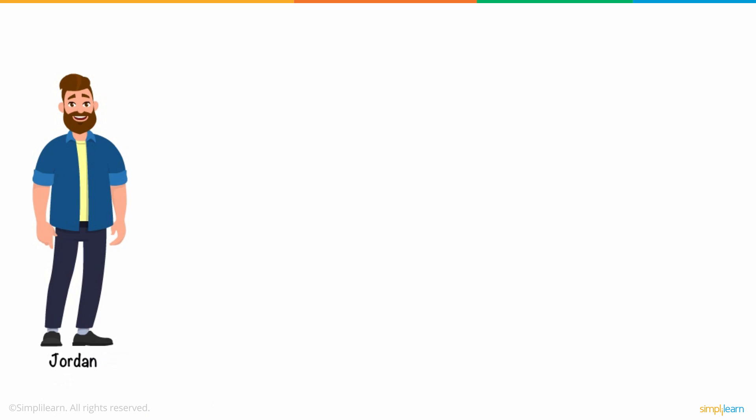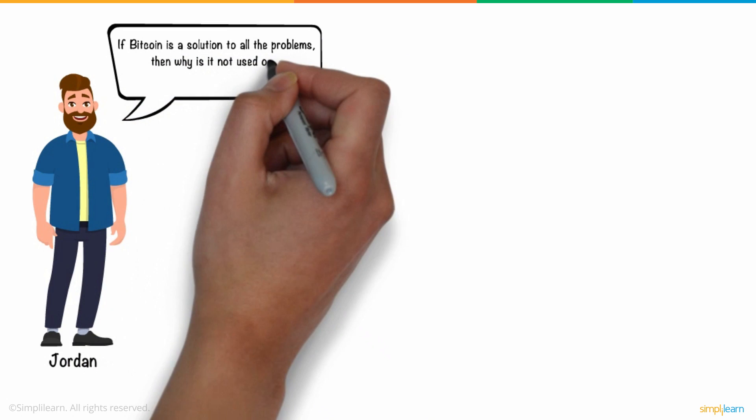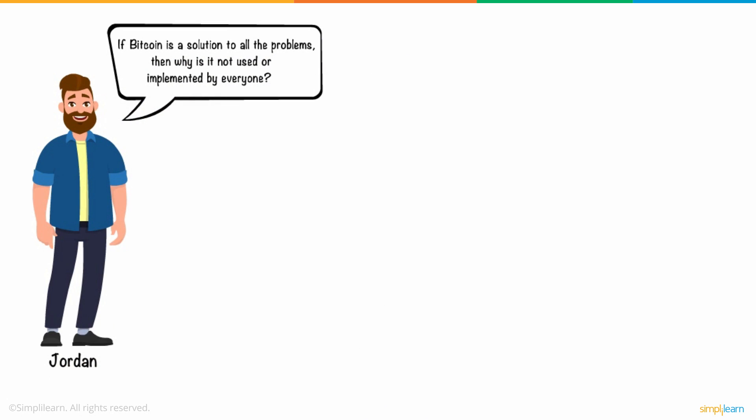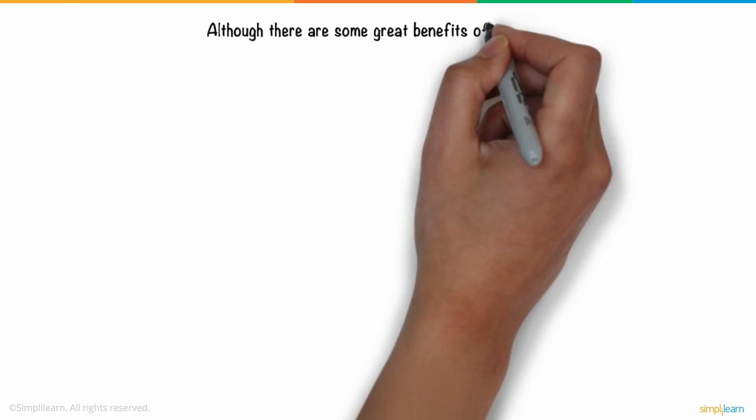Jordan was slightly relieved, but still curious to know that if Bitcoin is a solution to all the problems, then why is it not used or implemented by everyone? Jack mentioned that Bitcoin is an alternative to the current system, and it cannot be controlled by any bank or government. Although there are some great benefits of Bitcoin, many people like Warren Buffet and Mark Cuban still view it as risky.